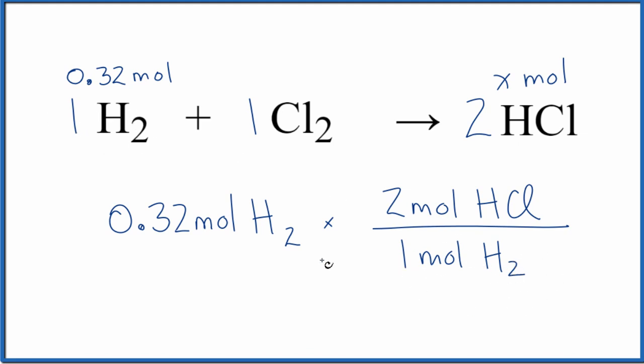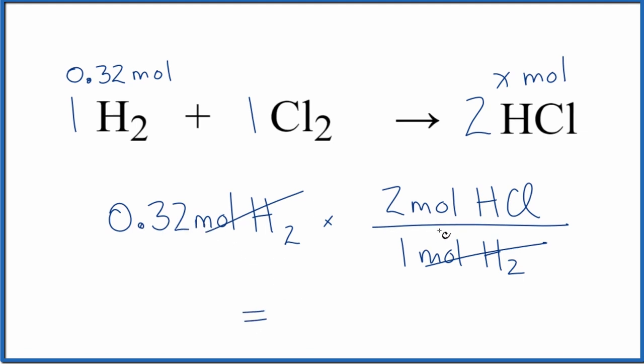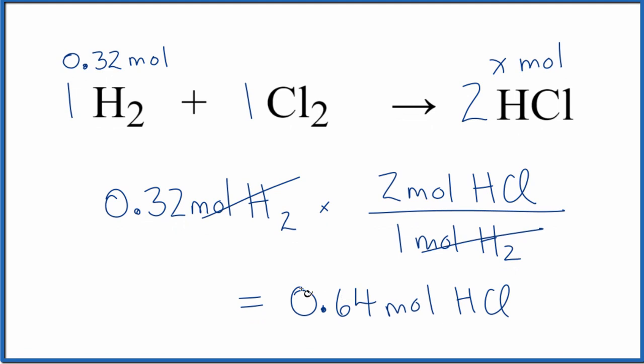I put the 1 mole of H2 on the bottom because when I multiply and then divide, those cancel out. I'm left with moles of HCl. That's what I want. And we end up with the same answer. 0.32 times 2 moles, 0.64 moles of HCl. So that's the same thing we got before.